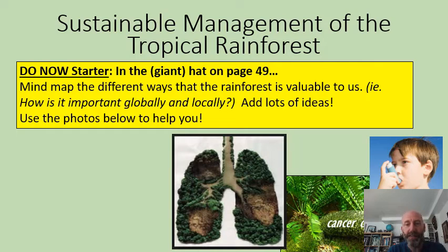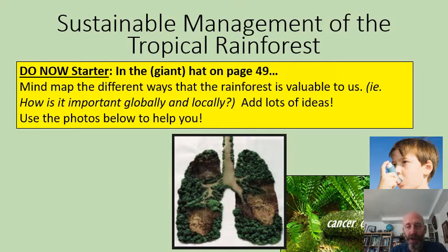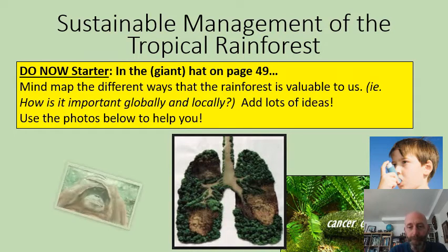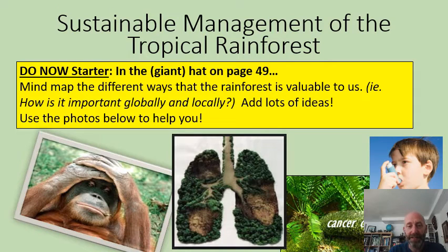The first thing I'd like you to do is turn to page 49 in your booklet. You'll see there's a big top hat and in that hat I want you to think about how the rainforest is valuable to us. Try and note down or mind map every way — globally and locally — that it is useful, that we use it, that it protects us. Think about things like climate change but also the services and goods it provides. Have a look below as there are some ideas to help. Take a few minutes and try to add as much detail as possible.